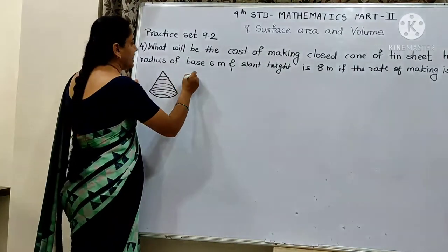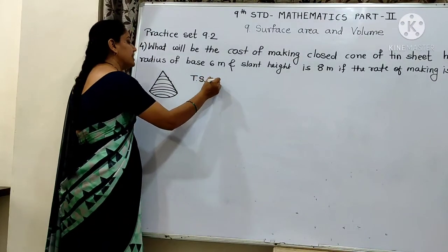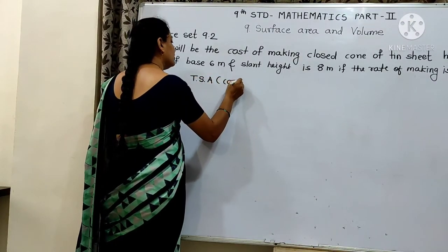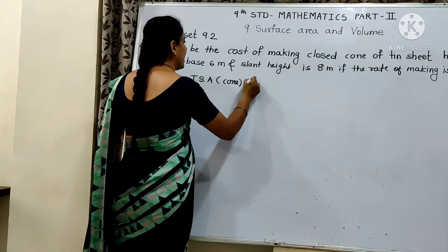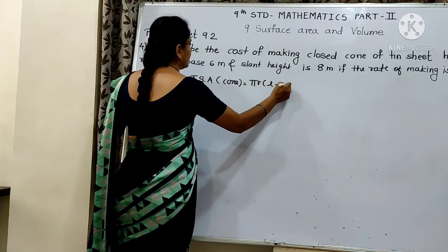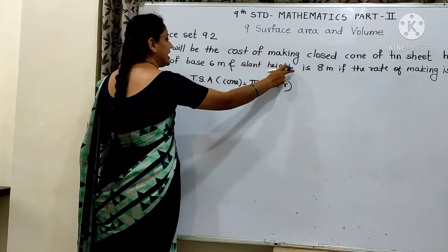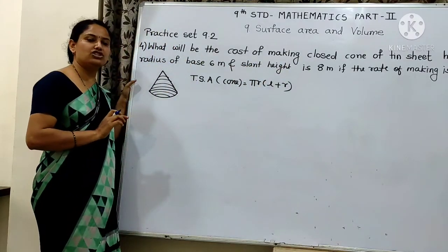The total surface area of cone is equal to pi r in bracket l plus r. Radius is a high area and slant height is a high area. This is the total surface area.